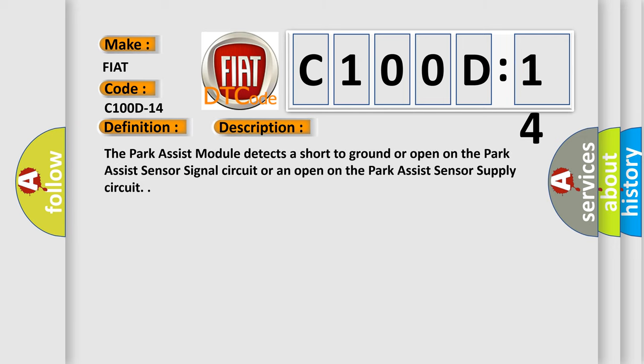The Park Assist module detects a short to ground or open. This subtype is used for failures where the condition of the park assist sensor signal circuit or the park assist sensor supply circuit is open.